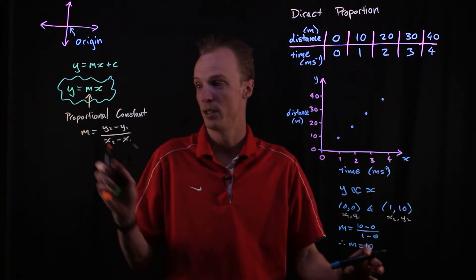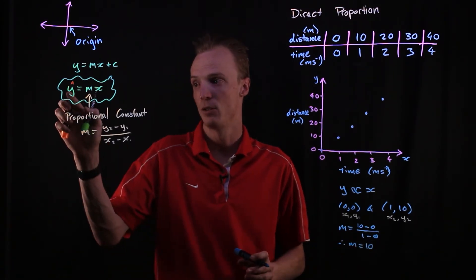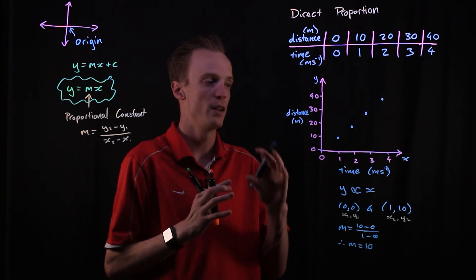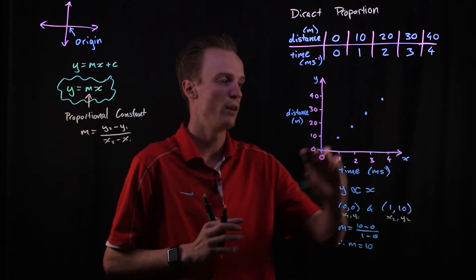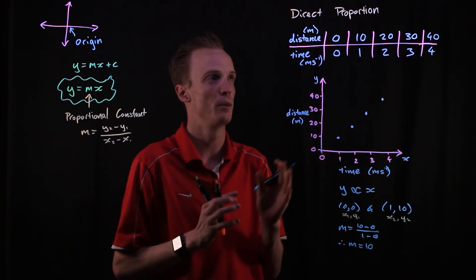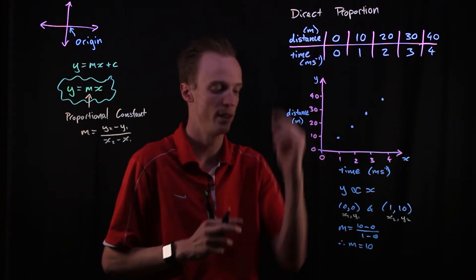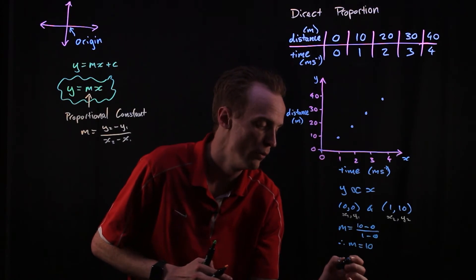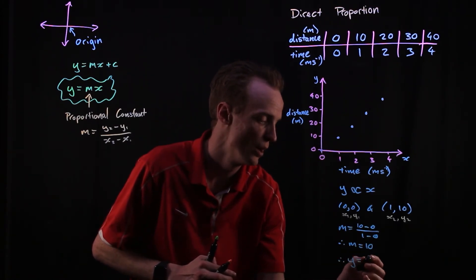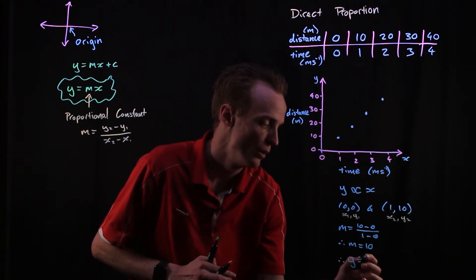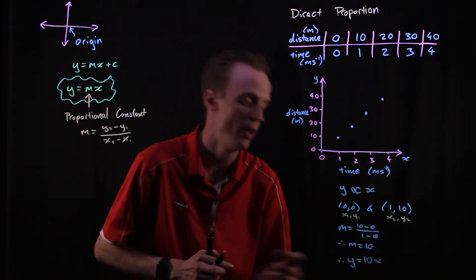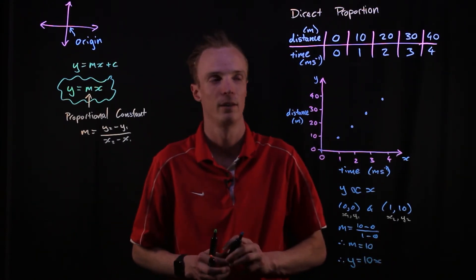We can now substitute this value back in and represent an equation for the relationship between these two variables. Therefore, y can be found using a proportionality constant of 10 multiplied by x, giving us y = 10x.